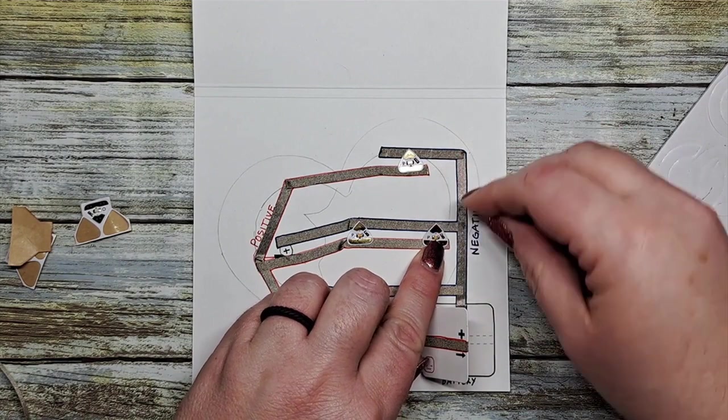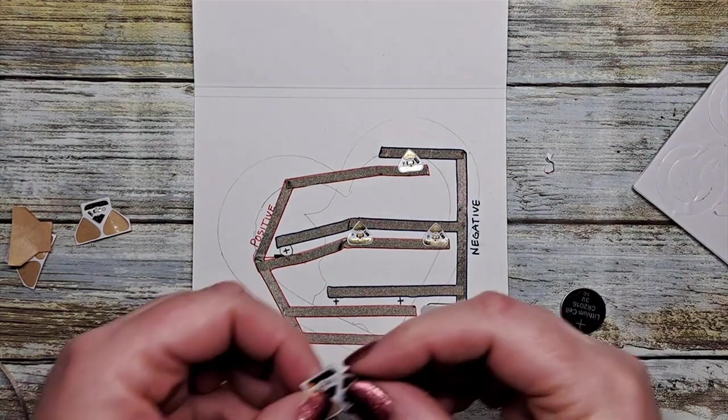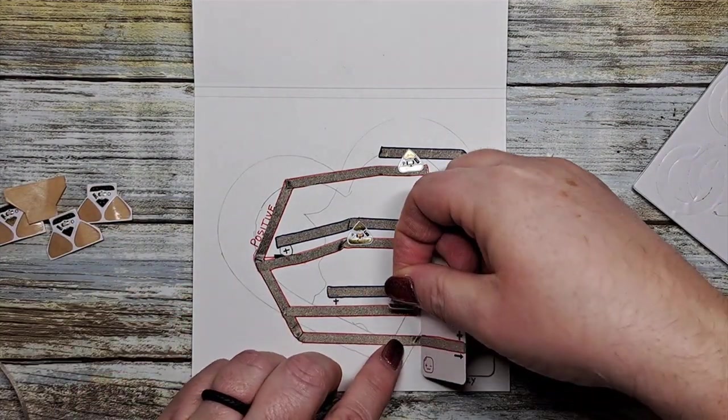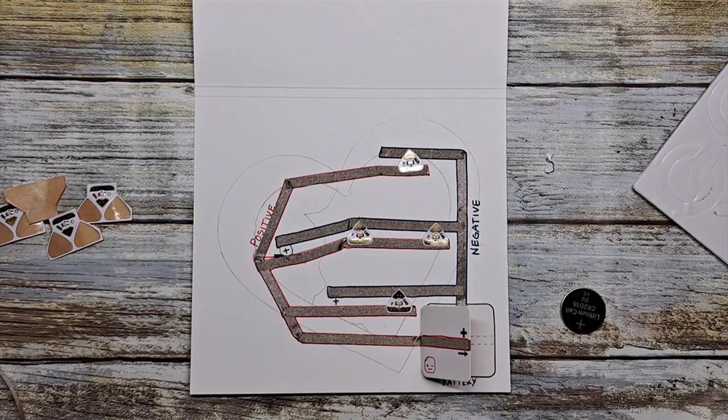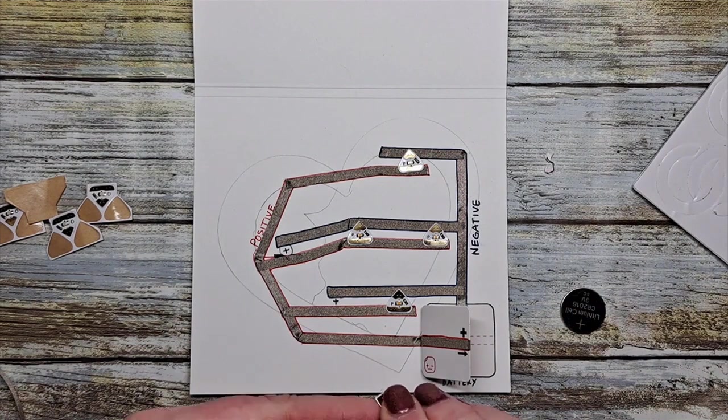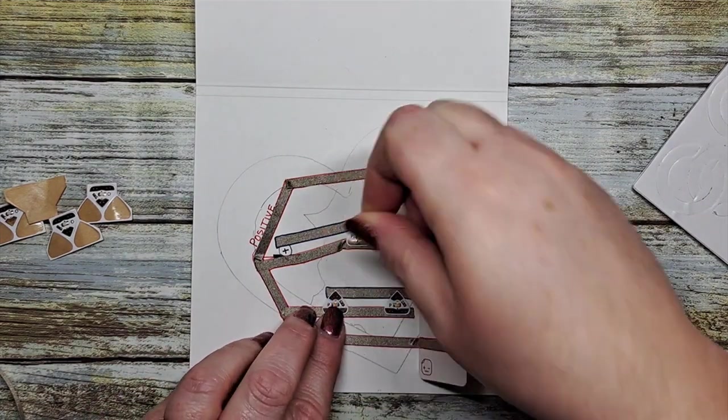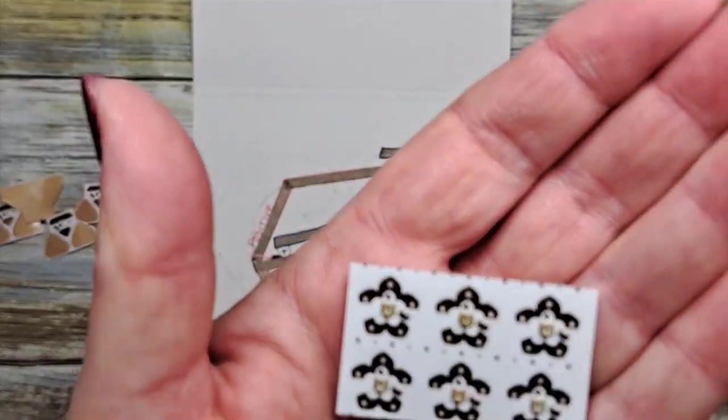And the negative points are on the negative side. And all those stickers are clearly labeled positive and negative. So you don't even have to look at your instructions or anything like that. They're clearly labeled. And there goes number five of our pink LED stickers.